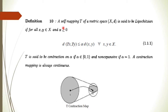To understand contraction geometrically: consider any two points from X and find the distance between them. When you apply the mapping T, you get TX and TY, which are also points of X. The distance between TX and TY is very small — the mapping is contracting the distance. The distance between the original points is large, but under T the distance becomes very small. This type of mapping is called a contraction mapping, and a contraction mapping is always continuous — we will prove this later.